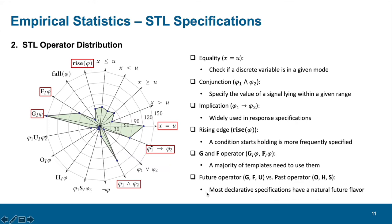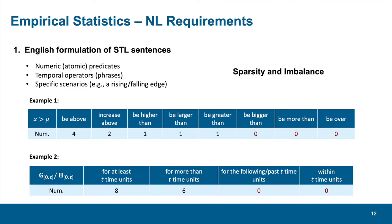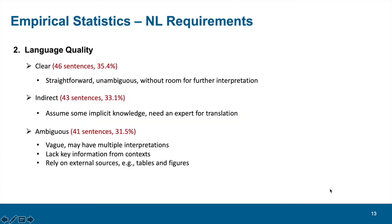Except STL formulas, we also consider the statistics of English requirements. The first observation is the sparse and unbalanced nature of the language usage habit. We find some acceptable utterances that do not appear in literature. Next, we evaluated the language quality, which is divided into groups of clear, indirect, and ambiguous sentences.